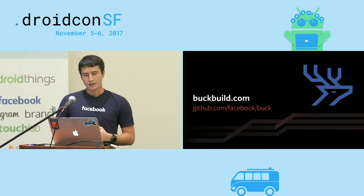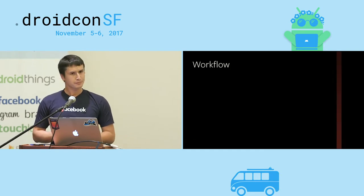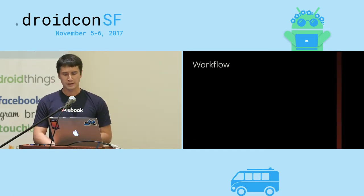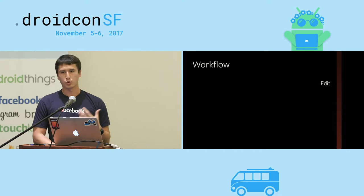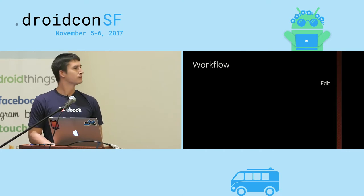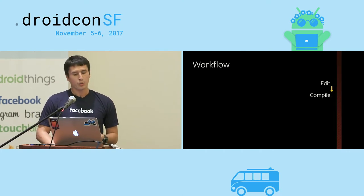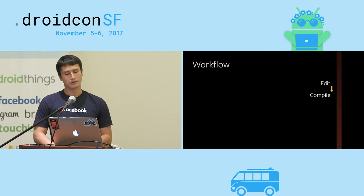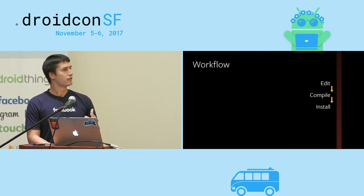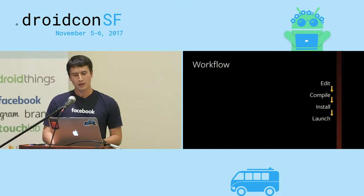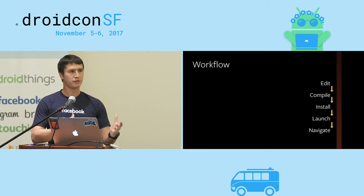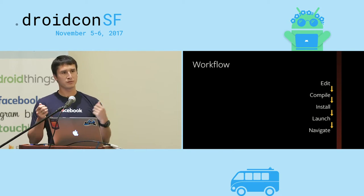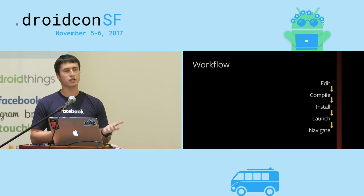Let's start by talking about our workflow. This is what we do every day. We edit some code — as we're working on our app, maybe we're trying to tweak some UI, fix a bug, iterate on a new feature. We then go to compile the code. We install on our device or emulator. We relaunch the app. And we navigate or reset state somehow — go back to where the bug was found or to the screen implementing our feature. We test to see whether our code change did what we wanted.